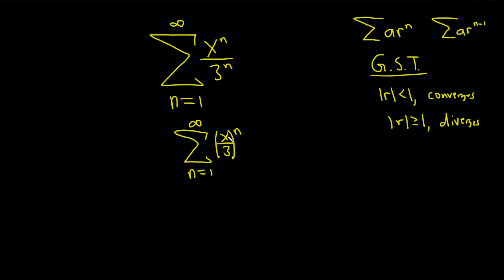So now we can identify r. So r here is x over 3. And we want this to converge, that's what we want. x here is a number, it's a real number. So we're looking for all of the values of x, that's what the question wants.